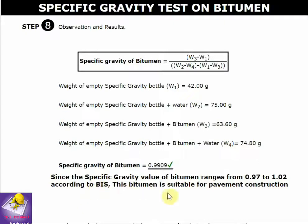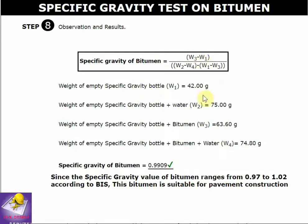Since the specific gravity of bitumen ranges from 0.97 to 1.02 according to BIS, the Bureau of Indian Standards, this bitumen is suitable for construction of pavement. That concludes the specific gravity test of bitumen, which is a major test for bitumen quality.